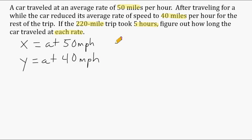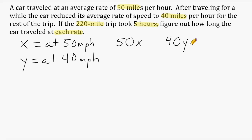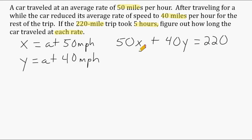If we take 50 miles multiplied by x — the total time traveling at that speed — we get the distance at that speed. Separately, multiplying 40 by y gives the total distance at that speed. Adding those two results gives 220 miles. However, we can't solve this equation as-is with two variables, so we need another equation to set up a system of equations. We need another piece of information given in the problem.